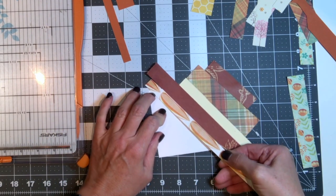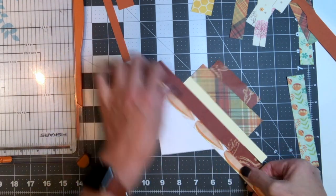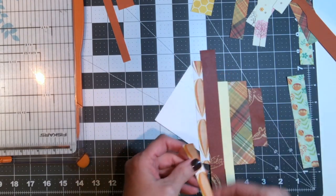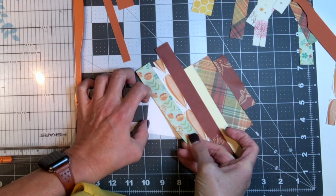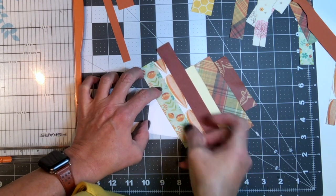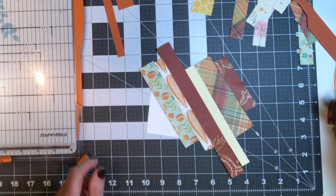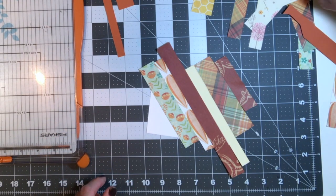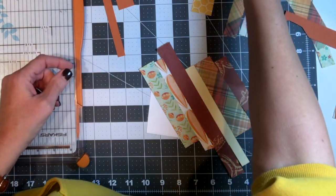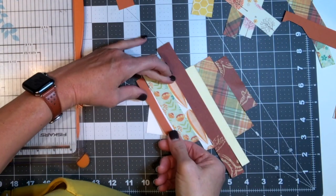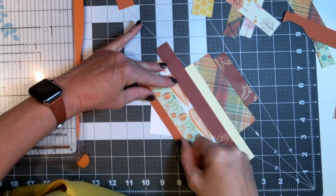So also, when you put the strips next to each other down on your card base, you want to make sure that you've got the edges right up next to the one that's laying down next to it. Once again, just to make sure that all the white is covered and you don't have any sticky showing. So you just want to get your pieces of paper laid down.